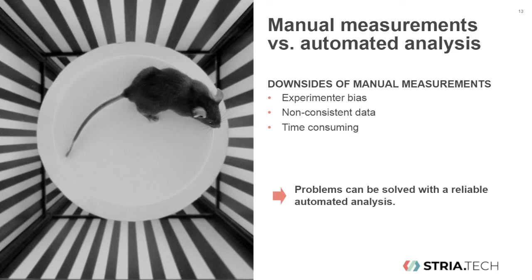Research on eye diseases and vision disorders is usually carried out with rodents, especially mice and rats. It is essential that the researcher can identify how well that animal can see, and we have already seen that the optomotor reflex can give you an answer to that question. However, if you were to analyze the animal behavior manually, there would be several problems: there is bias of the researcher, and different observers actually do get different results — meaning rather non-consistent data.